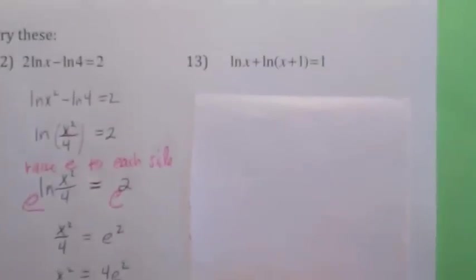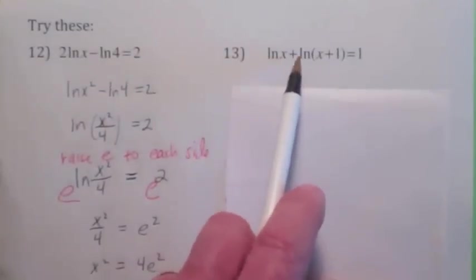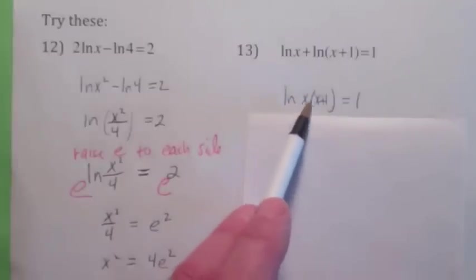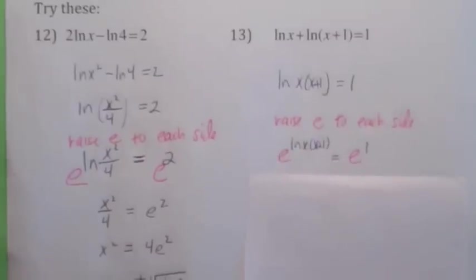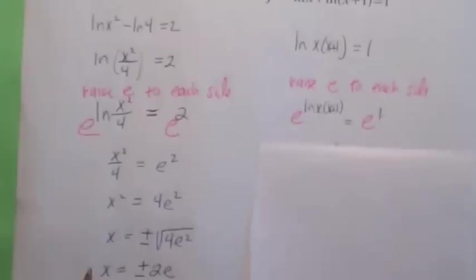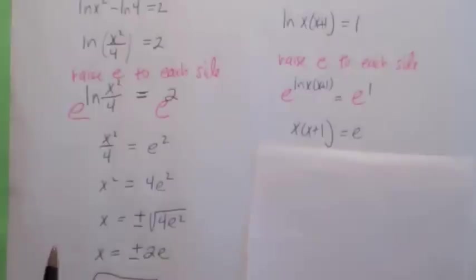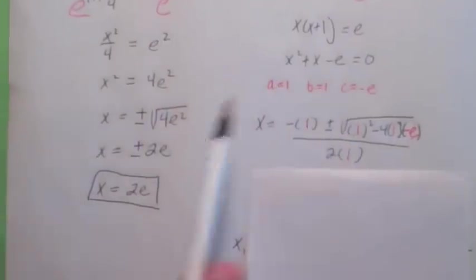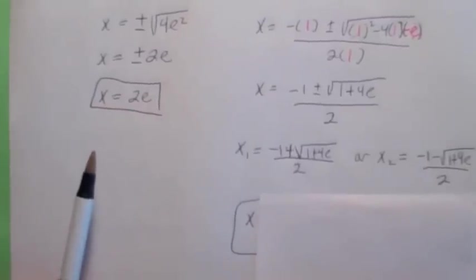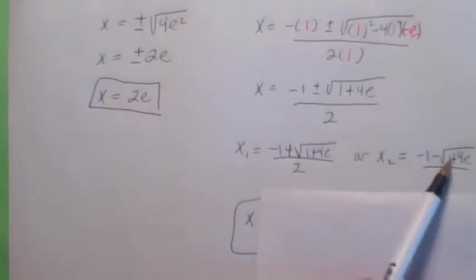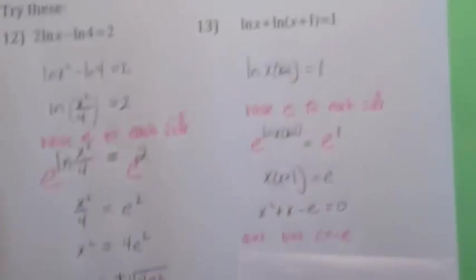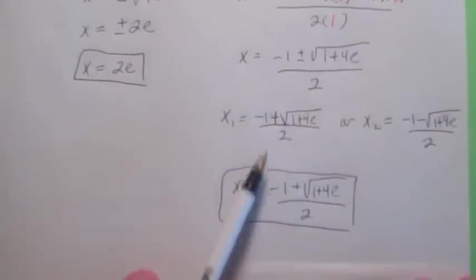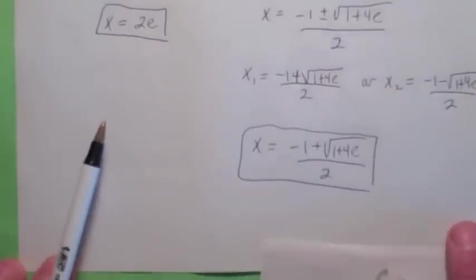For the second practice problem — the harder one — combine the logarithms into the log of a product: ln(x times (x plus 1)) equals 1. Raise e to each side; e to the ln of something is just that something, so you get x(x plus 1) equals e. This becomes a quadratic equation, and you'll need the quadratic formula with a equals 1, b equals 1, c equals negative e. You get two answers: one is negative (negative 1 minus the square root of 1 plus 4e over 2) and one is positive. Since the domain requires x greater than 0 and x greater than negative 1, the negative answer is ruled out. The final answer is x equals (negative 1 plus the square root of 1 plus 4e)) over 2.